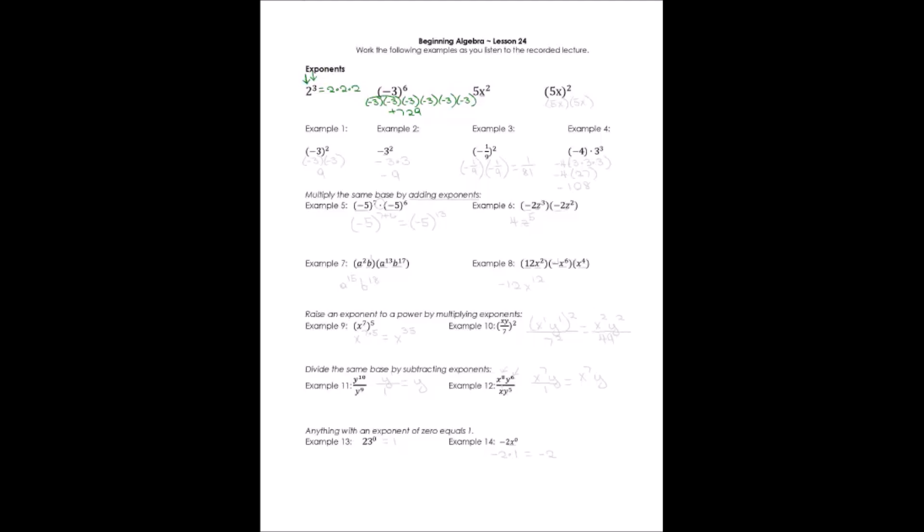What we have to remember is that when the negative is included in parentheses, it is raised to the exponent. If it's not included in parentheses, it is not part of the exponent — it's just stuck out front. For 5x squared, the only thing that is squared is the x value; the 5 is just in front. That's different from (5x) squared, where everything in parentheses is squared. The exponent notation and where the parentheses are is really important.